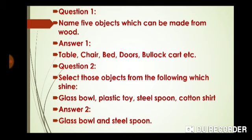Question number two: Select those objects from the following which are lustrous. Objects are glass bowl, plastic toy, steel spoon, cotton sheet. Answer is glass bowl and steel spoon. These glass bowls and steel spoons are very reflective material. We can see our face also in this.